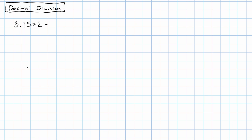If we multiply 3.15 times 2, we'll have 3.15 times 2: 10, 3, 6 — 2 digits after the decimal point. That extra trailing zero isn't doing anything for us. We get 6.3.